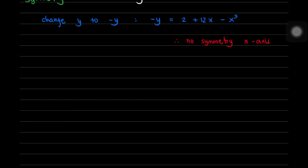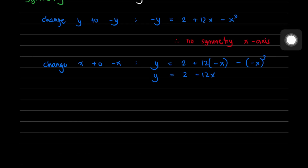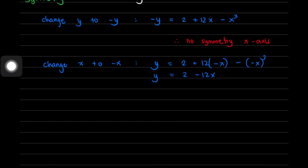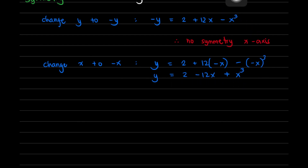Now, testing for y-axis symmetry, we change x to negative x. This gives y equals 2 plus 12(negative x) minus (negative x) cubed, which simplifies to y equals 2 minus 12x plus x cubed. Comparing to the original, it is not the same. Therefore, no symmetry with the y-axis.